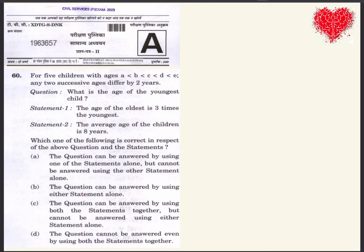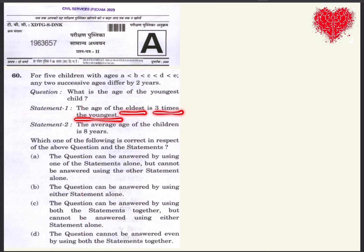Hello friend. The question says: for five children with ages, age of child A is less than B, B is less than C, C is less than D, and D is less than E. Any two successive ages differ by two years. The question is: what is the age of the youngest child? Statement one says the age of the eldest is three times the age of the youngest, and statement two says the average age of the children is eight years.